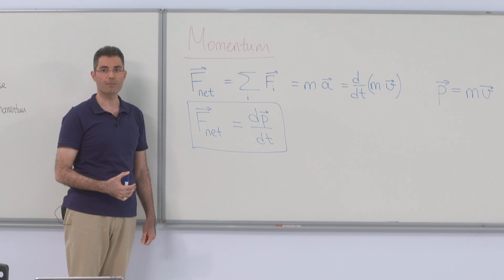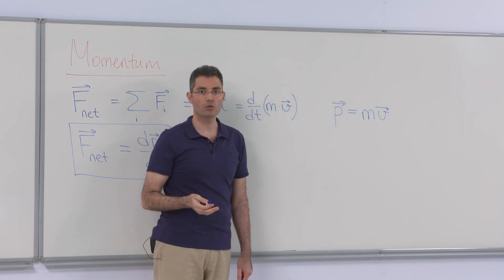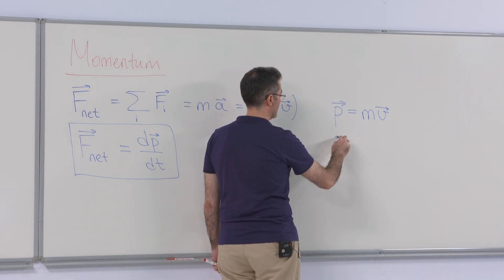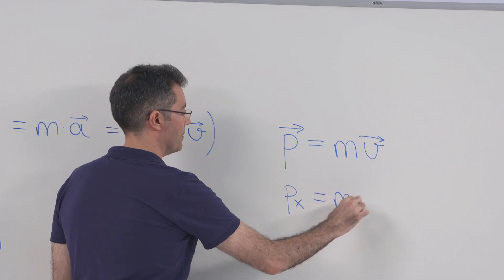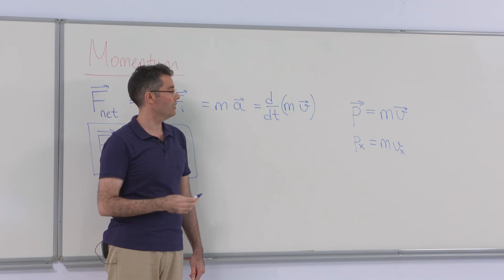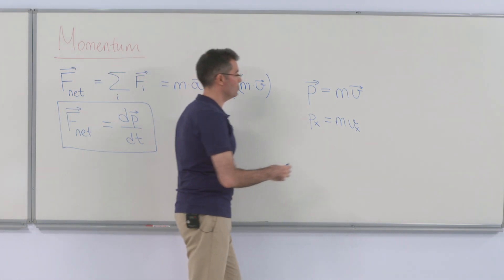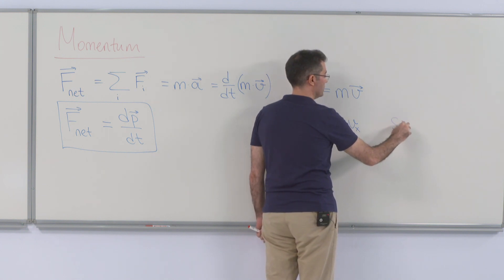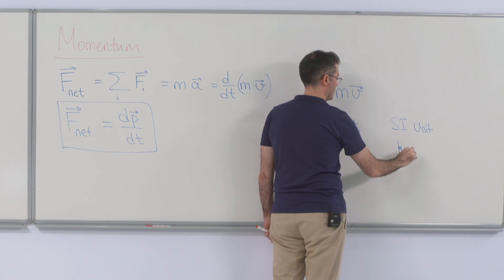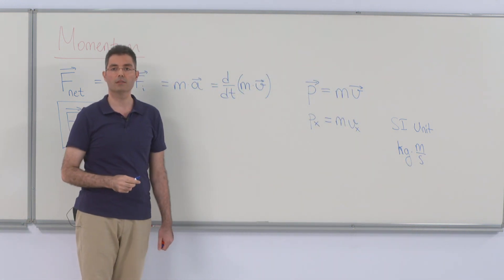Momentum is a vector quantity. Therefore, when it is conserved, each component will be constant in time. The components are px equals m times vx, and similarly for the y and z components in three dimensions. The units of momentum are kilogram times meter per second in standard units.